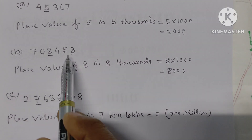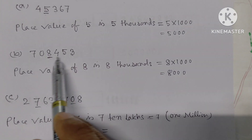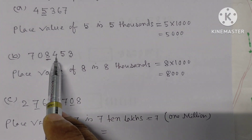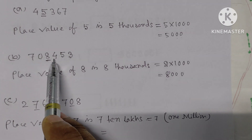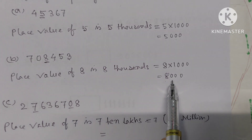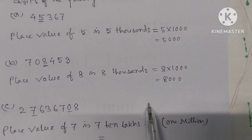To write 8,000 easily, write 8 followed by three zeros: 8,000.